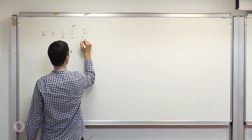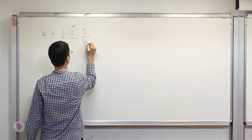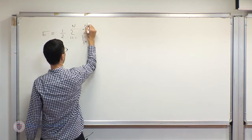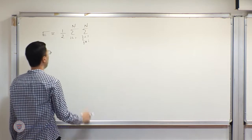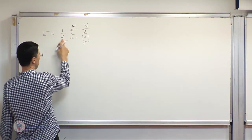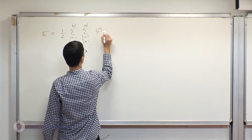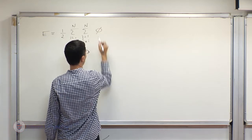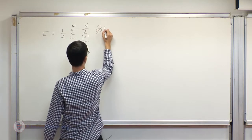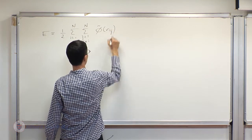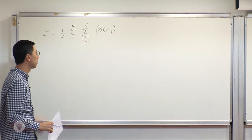So we have n atoms, and we are summing over the interactions of the atoms, counting every pair only once. The interaction is of the form where we have a pair potential evaluated at the distance between the pair.